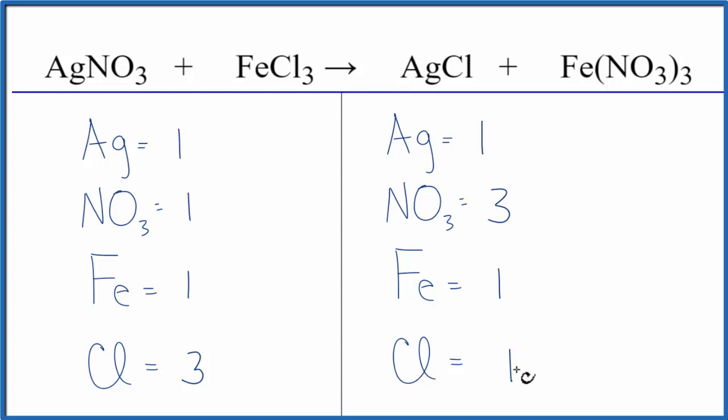It looks like we could balance the chlorines first by putting a three in front of the AgCl. So we have one Cl times the three. That'd give us three chlorines, those would be balanced.